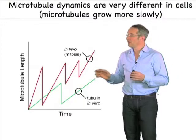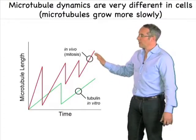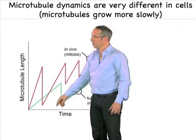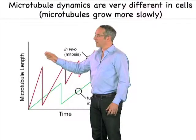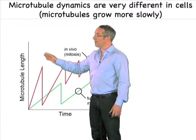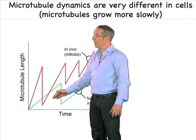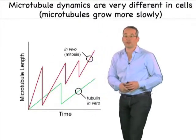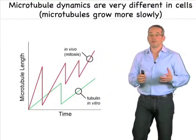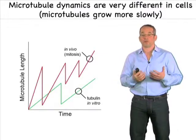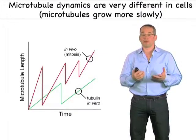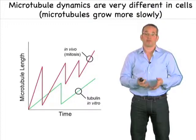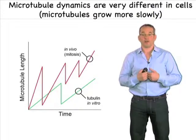What I've illustrated here is an interesting behavior known as dynamic instability, where you can see the microtubule grows, and at some stages it transitions to a shrinking state, and then it starts growing again. Both in vivo and in vitro, microtubules are turning over by dynamic instability, but they're much more dynamic in cells than they are in a test tube.